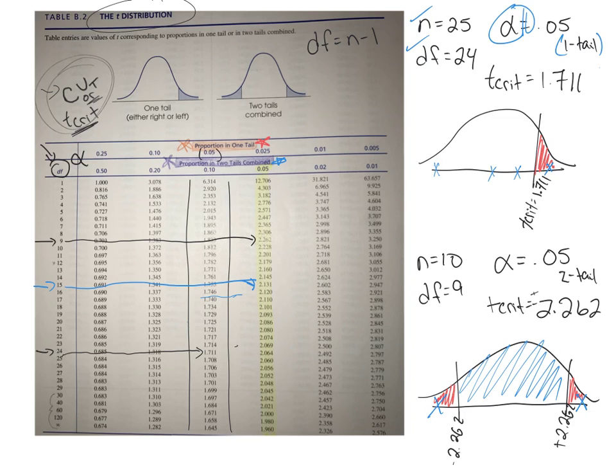So again, find out your sample size, degrees of freedom, your alpha level, and it's a one tail test or a two tail test, and you can find your critical value of t.